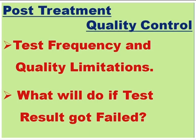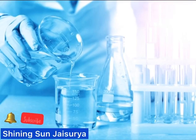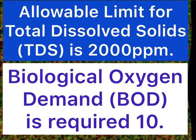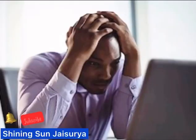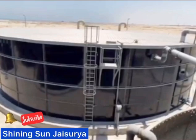Stage 3 — Post-treatment lab test: test frequency and quality limitations. Treated sewage water is frequently tested by government technicians and plant technicians to ensure water quality. The allowable total dissolved solids, i.e. TDS, is 2000 ppm. Biological oxygen demand, i.e. BOD, should be less than 10 — and in this plant, it achieves 0. If the test result is found negative, the whole treated water will be sent to the storage tank for the re-process.